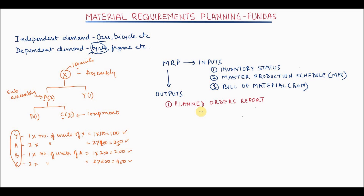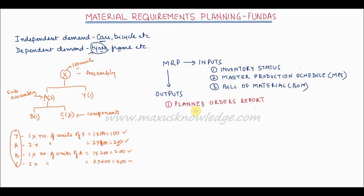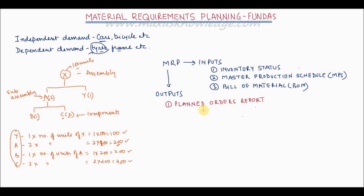The second output is the order release report, which gives information about planned orders to be released on the present date. If you are on the 20th of March, it tells you what orders need to be released today, and helps purchase managers release purchase orders to suppliers.